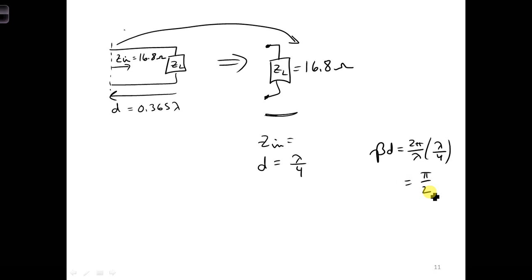So then the cosine terms go to zero, and we wind up with ZN equal to Z naught times zero plus J Z naught over zero plus J ZL, which is equal to Z naught squared over ZL.